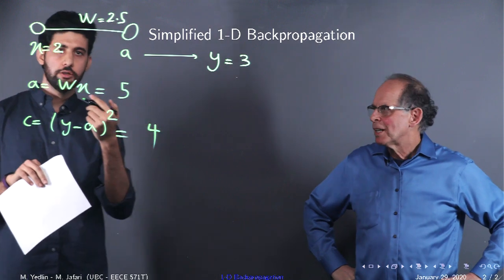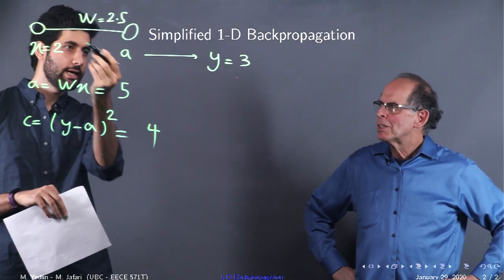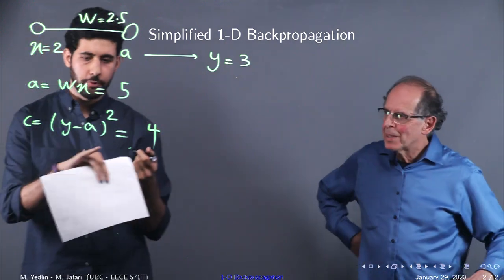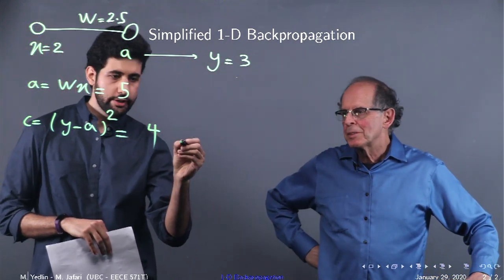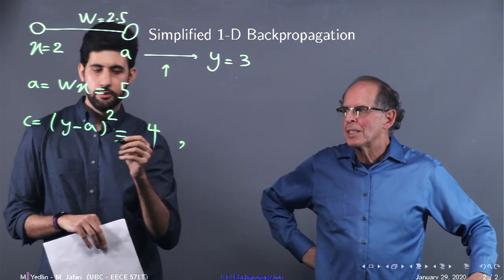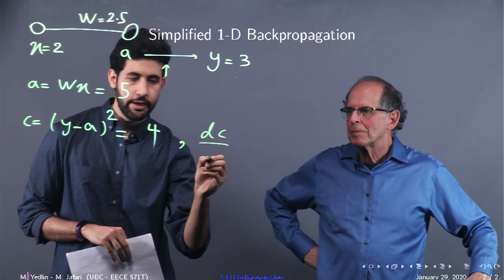Now, we want to find in which direction we should change W in order to satisfy this, reduce this cost function or satisfy this number. So, first, we take, so now we are here, and take the derivative of C with respect to A.